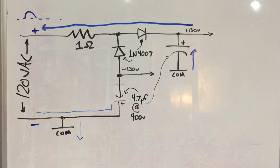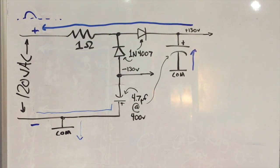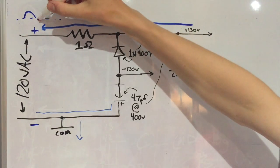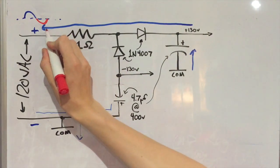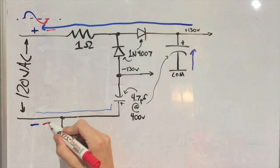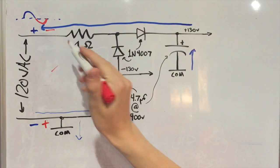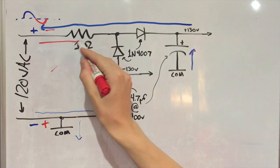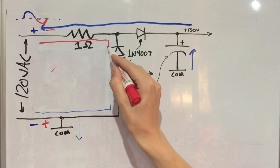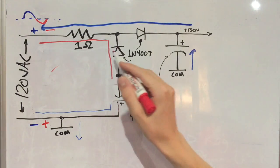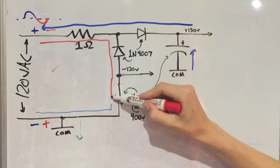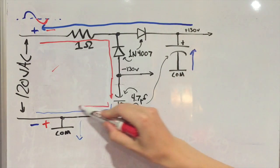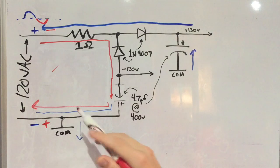So then that's good, but we need the other half of the cycle in order to generate the 260. So on the other half when it becomes negative, this polarity reverses. So now this is a negative and this is a positive. So the electrons are going to want to come this direction through this resistor, back down through the diode, because now this one is forward biased and this one's reverse biased, and charge up this capacitor and then return through the common.